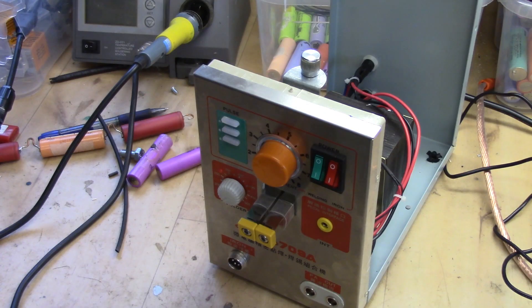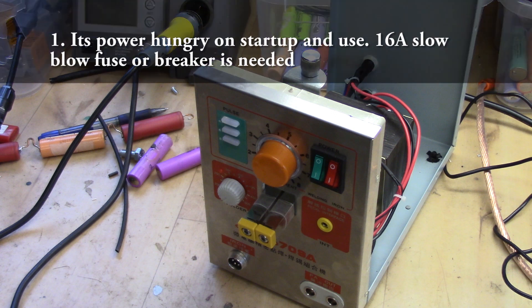So a couple of points that you need to consider. First of all as I said before, it rushes in a huge amount of current on the startup and the machine is very power hungry. So if you are going to buy this, make sure you have proper fusing. I do recommend a 16 amp slow blow fuse. It do work on 10 and 13 if you have slow blow as well in some cases.